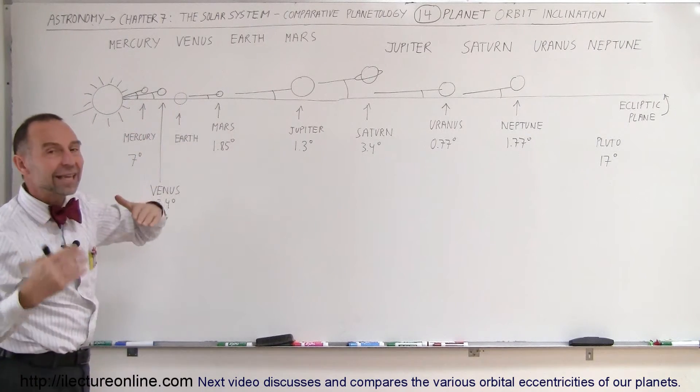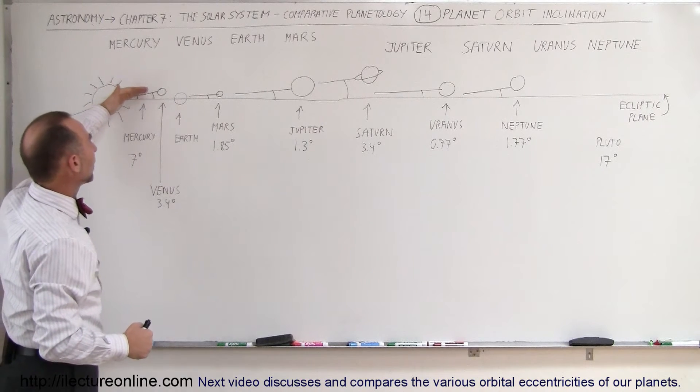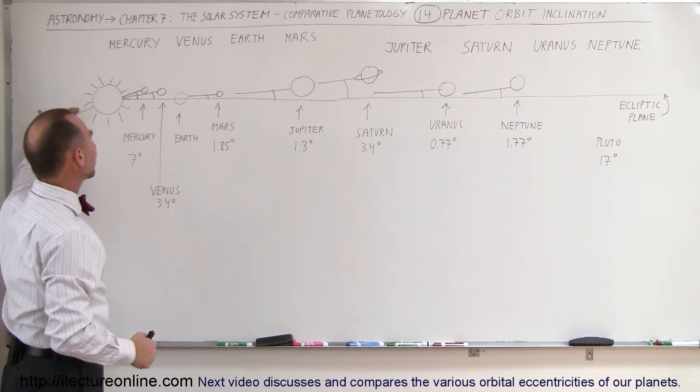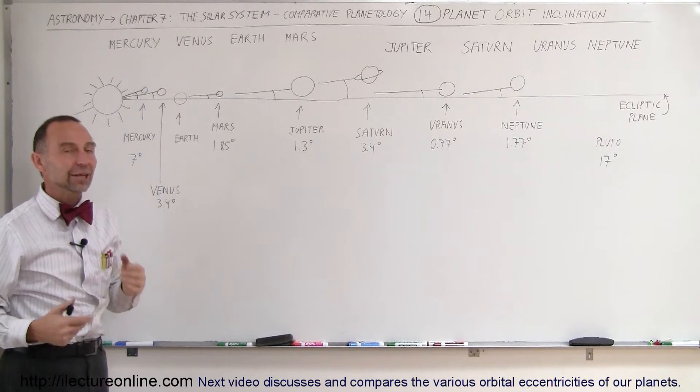So it's a wrong indication here if you think that the planets are always above the ecliptic plane, because the orbit will take them below the ecliptic plane half the time, and above the ecliptic plane the other half of the time.